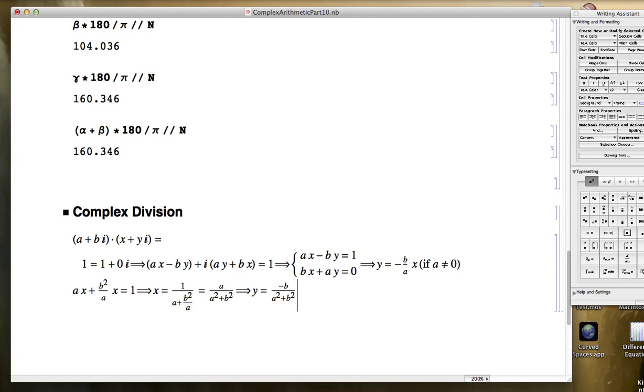So evidently, x plus iy will equal, when a is not 0 at least, a over (a squared plus b squared) minus i times b over (a squared plus b squared).